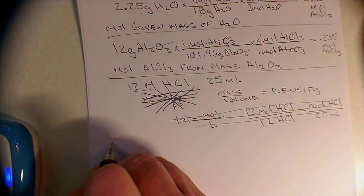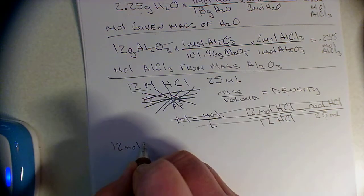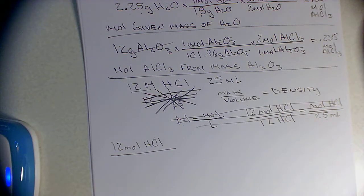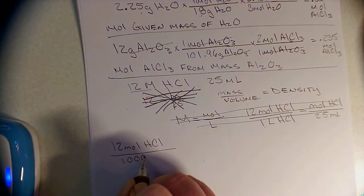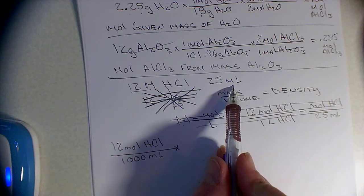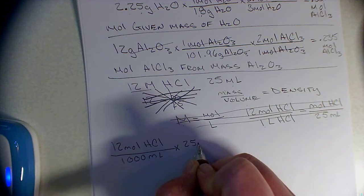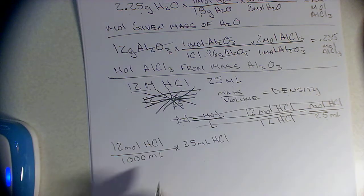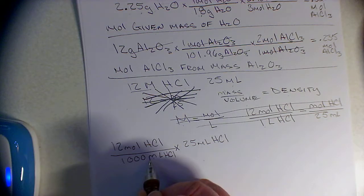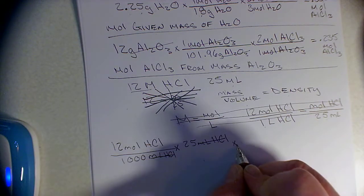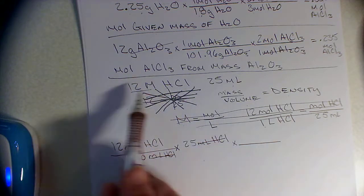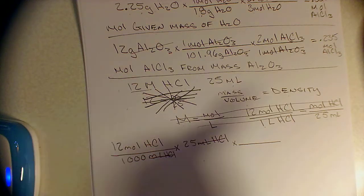So let's start here. I have 12 moles of HCl per 1 liter of HCl, and I'm going to do the conversion to liters right away because that is the easiest way not to make a mistake. So I go 1 liter per 1000 milliliters, times 25 milliliters of HCl. My milliliters of HCl cancel, so now I'm in moles of HCl. The question I'm asked is how much AlCl₃ can I make given my starting concentration and volume.